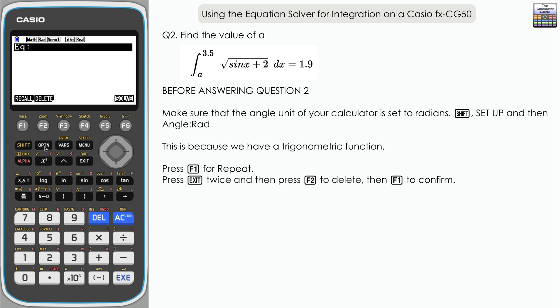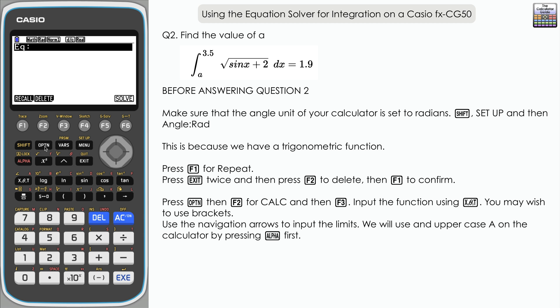We've got an integration again, and this time we're looking for the lower limit that satisfies this. We've also got a trigonometric function involving sine. Let's start by inputting the integration: option, F2 for calc, F3 for integration. Then we want to carefully input this. We'll start with the square root: shift and square root, sine, and then X. Just to make sure we're adding two after our trigonometric function, I'm going to put the sine in a set of parentheses.